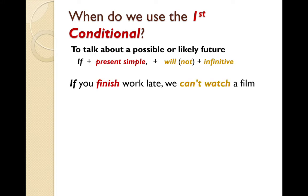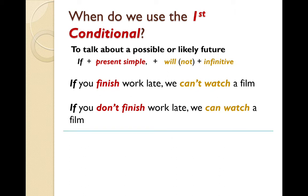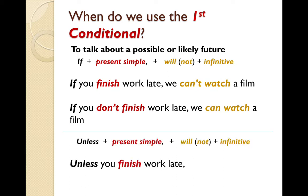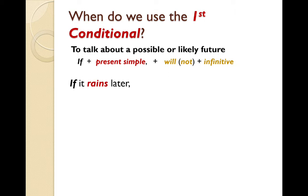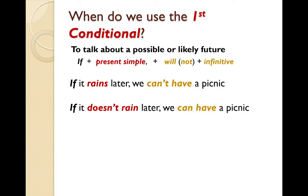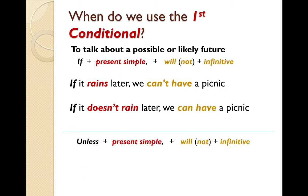If it rains later, we can't have a picnic. If it doesn't rain later, we can have a picnic. So 'if it doesn't rain later' and 'unless it rains later' have the same meaning — that we can have a picnic. We can also use the first conditional to talk about a possible or likely present state, and again we can use 'if' or 'unless'.